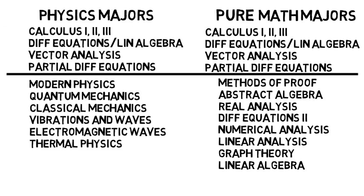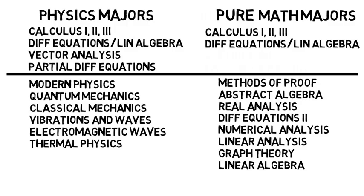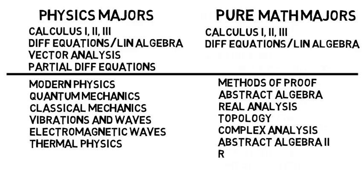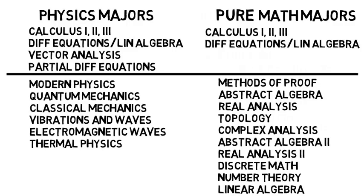Then for pure math students, they don't take vector analysis and partial differential equations, and many won't take these applied math courses. They would take topology, complex analysis, more abstract algebra or maybe more real analysis, discrete math, number theory, and they could also take more linear algebra. Students will differ, but hopefully you get the idea. And note, this is not a guarantee. Pure math students could take some of the other classes listed in applied math, and applied math students could take other classes like complex analysis or more abstract algebra, but this is just to give you an idea of the differences.